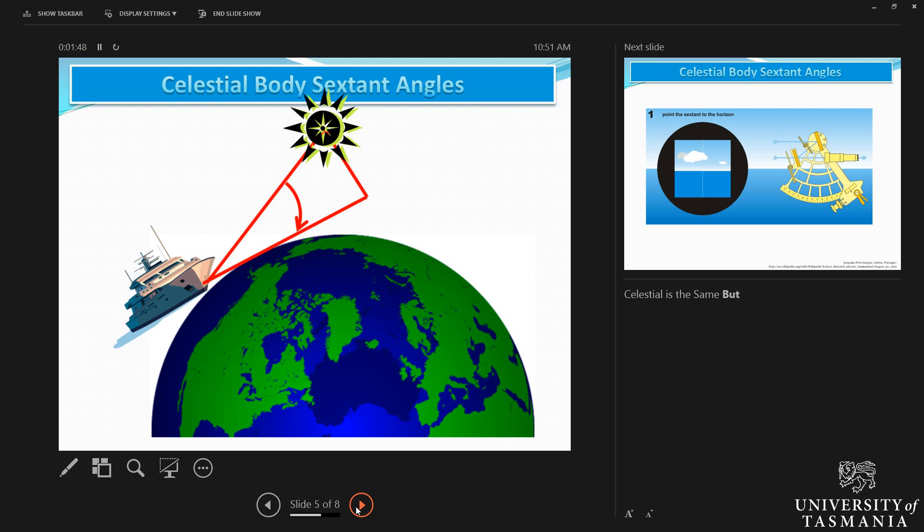for those of you who have never ever taken a sextant sight, you can visualize what actually goes through the observer's eyes when he or she is taking a sextant sight of a celestial body altitude.